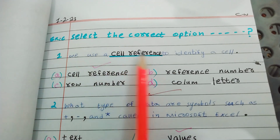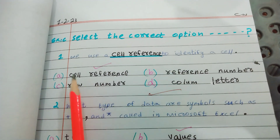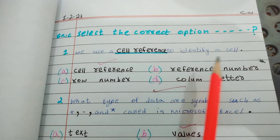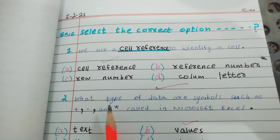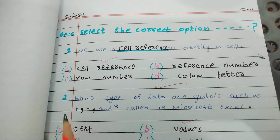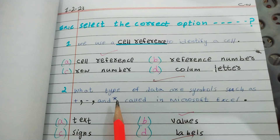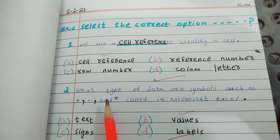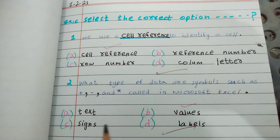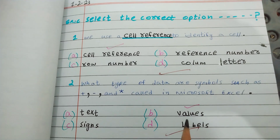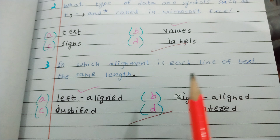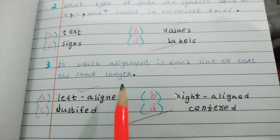Select the correct option. We use a cell reference to identify a cell. What type of data are symbols such as plus, minus, and star called in Microsoft Excel? Values — in which alignment is each line of text the same length?